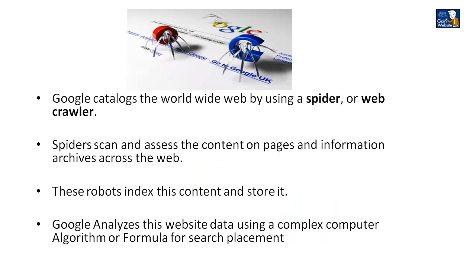Google catalogs the World Wide Web using what's called a Spider — a program that crawls the internet. Spiders go to various websites; if you have a website, Google's Spider is going to come to it, scan and assess the content of the pages, look at the code, look at all the tags and meta tags. Then it takes that information back to Google's mainframe computers, where they index the content. Google then analyzes your website using a very complex computer algorithm to determine your search engine placement, putting weightings on different factors — backlinks, social signals, and a bunch of other stuff — to determine where your website should rank.